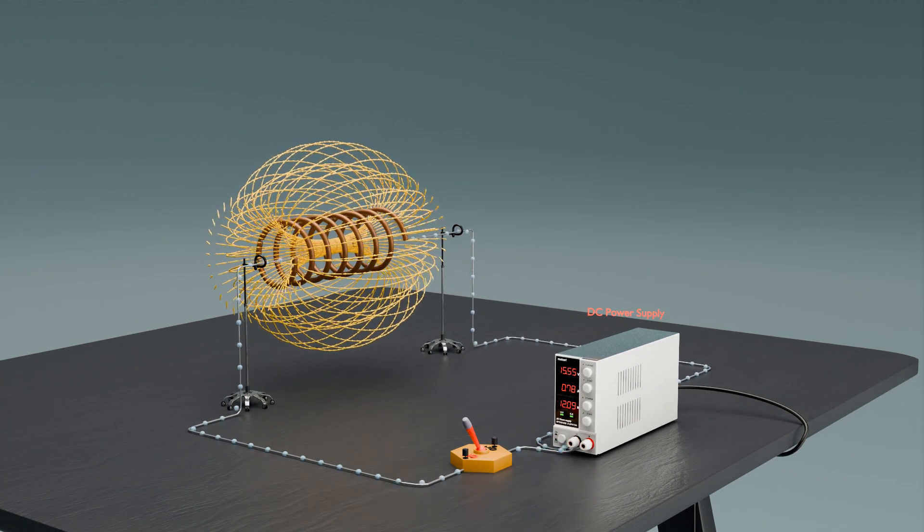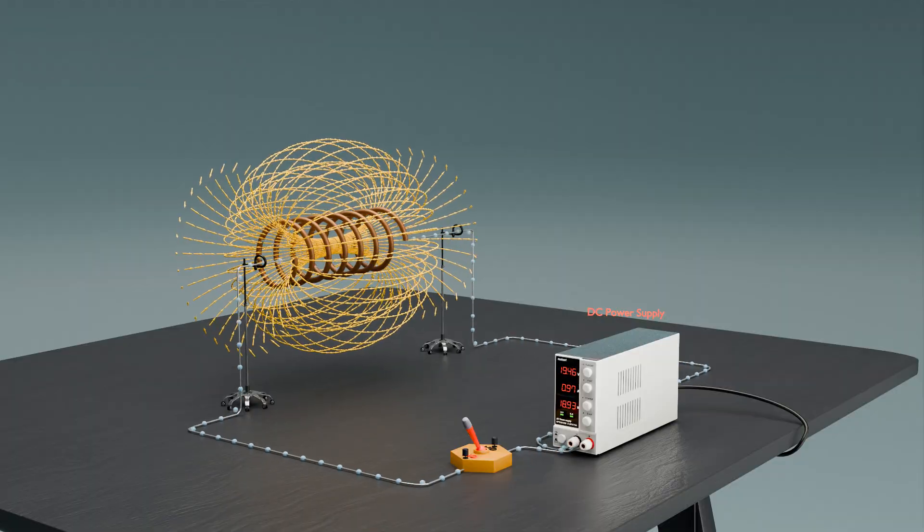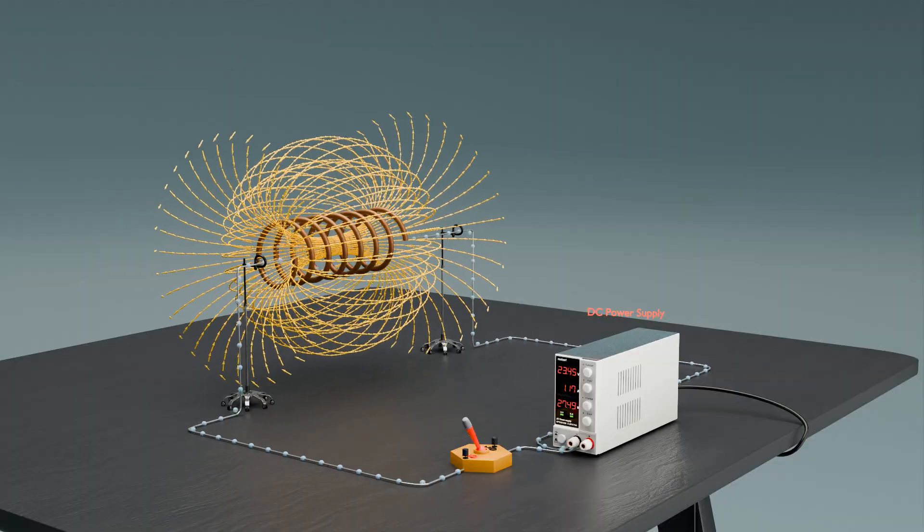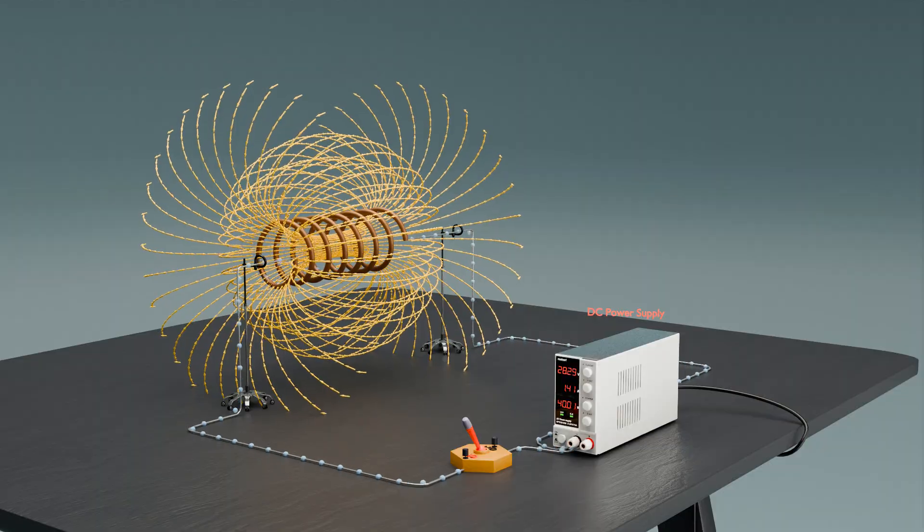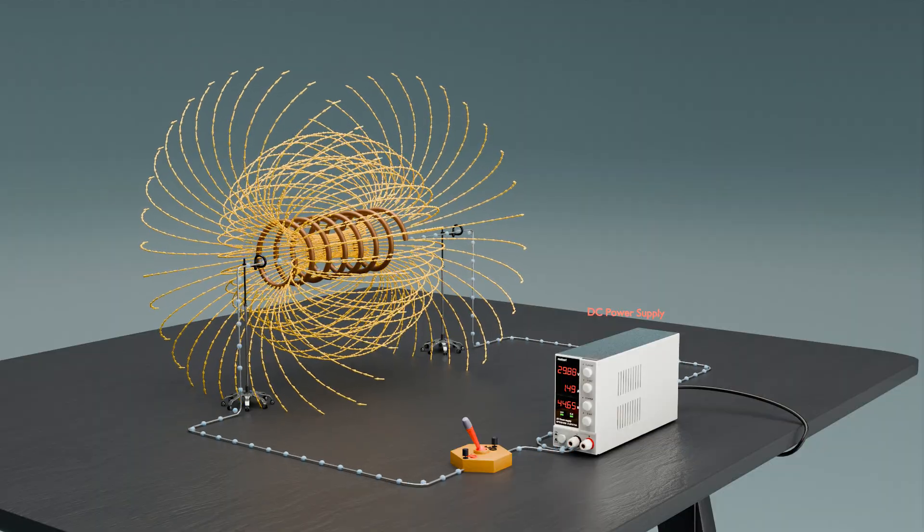According to Faraday's law of electromagnetic induction, the increasing current generates a time-varying magnetic flux within the inductor. This changing magnetic flux is proportional to the current flowing through the coil.